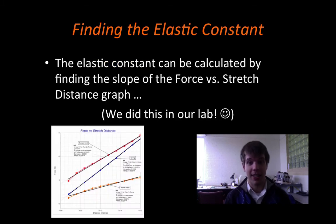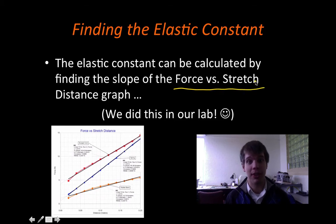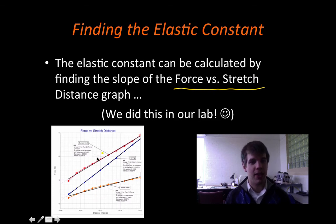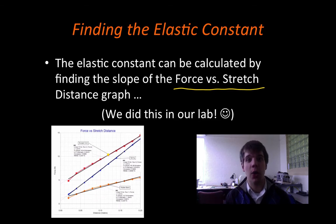In terms of finding the elastic constant, we actually did this in our lab already without ever calling it the elastic constant. The elastic constant can be calculated by finding the slope of the force versus stretch graph, and that's what we graphed in our investigative elastic materials lab. We did a linear regression to figure out what the slope of that line was — the slope is actually the elastic constant. It's likely when you did this lab, you saw that the rubber band had a much lower elastic constant than the bungee cord or the spring, because the rubber band is a lot easier to stretch.